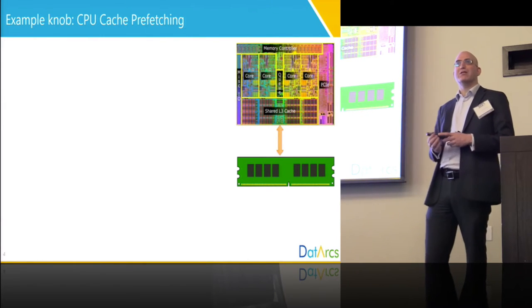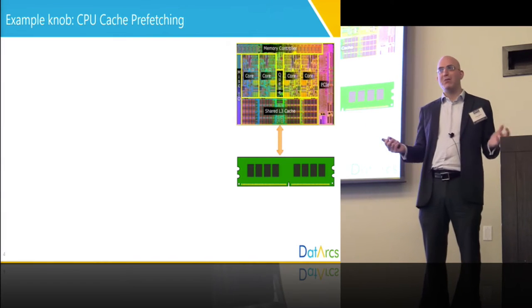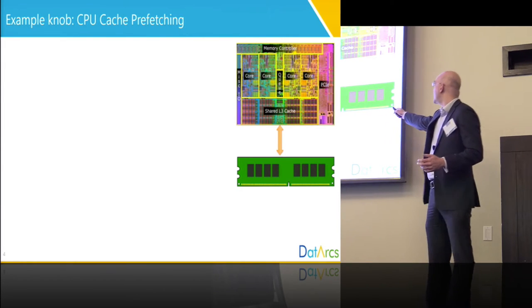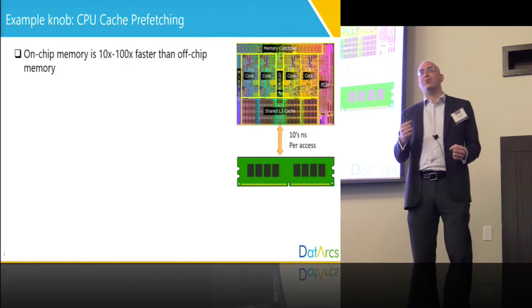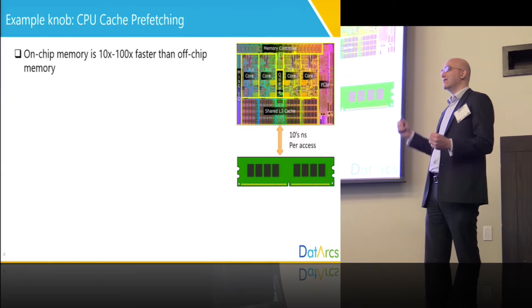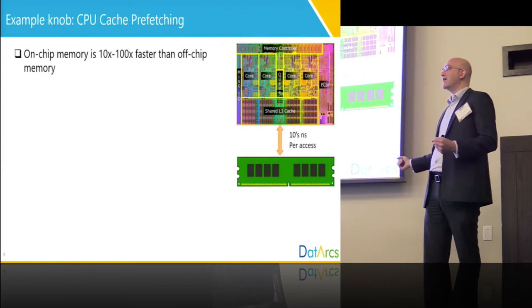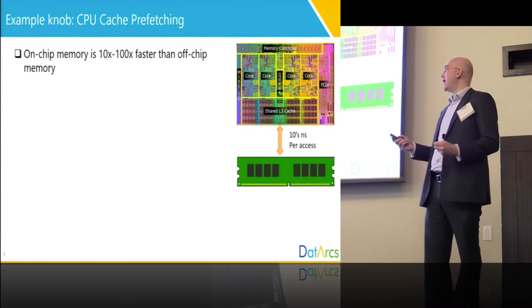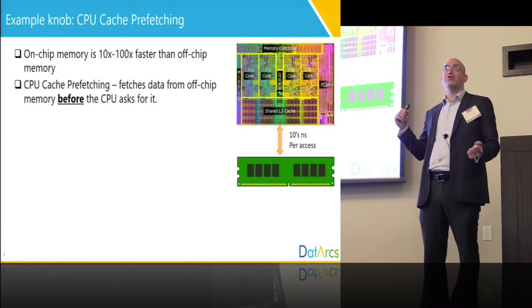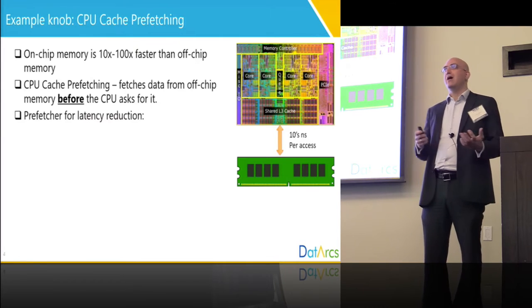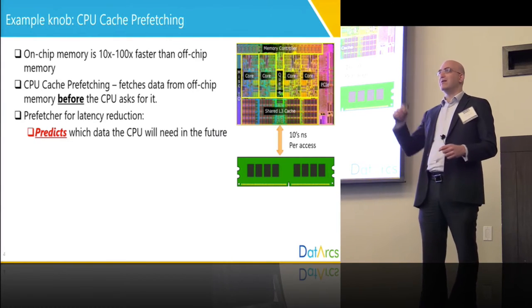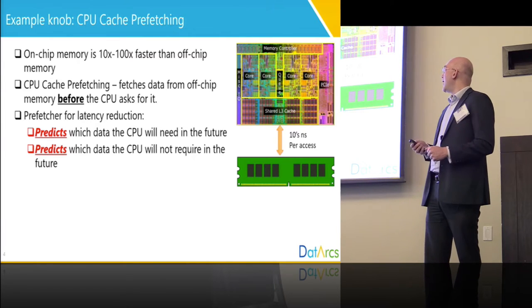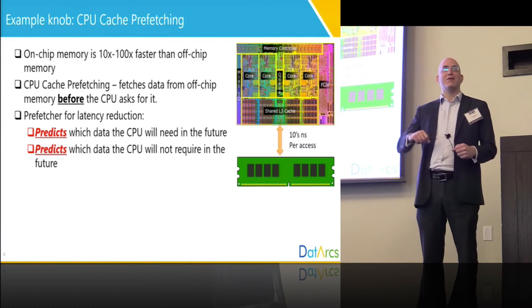CPUs today make heavy use of prefetching because they work at a very high frequency and need a lot of memory. There's not enough space on the CPU die itself for all the memory, so most of the memory is kept outside on external chips. Every time the CPU has to access external memory, it needs to spend on the order of tens of nanoseconds. For the CPU it's like eternity because it can execute hundreds of instructions during this time. Prefetching predicts which data the CPU will need in the near future but is not on the CPU die.